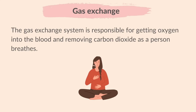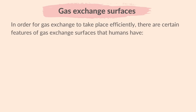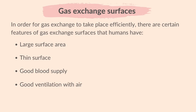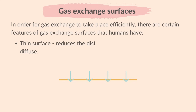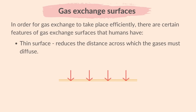The gas exchange system is responsible for getting oxygen into the blood and removing carbon dioxide as a person breathes. In order for gas exchange to take place efficiently, there are certain features of gas exchange surfaces: large surface area, thin surface, good blood supply, and good ventilation with air. Having a large surface area provides more space for diffusion, speeding up the rate of gas exchange. A thin surface reduces the distance across which gases must diffuse, allowing a faster diffusion rate.